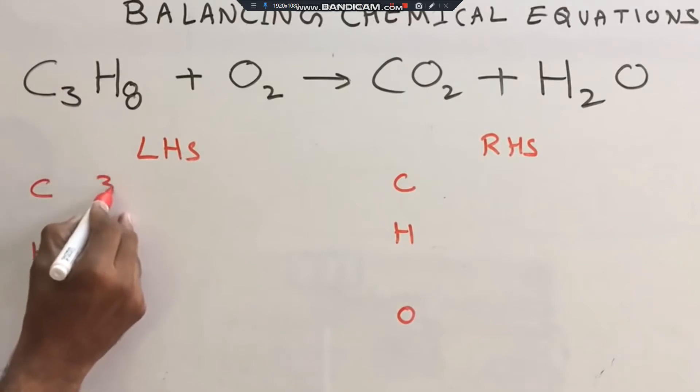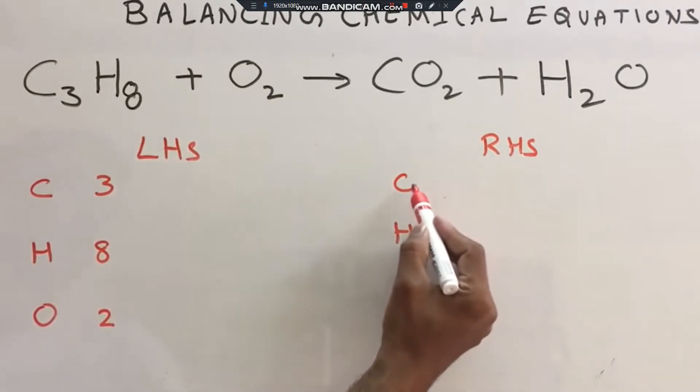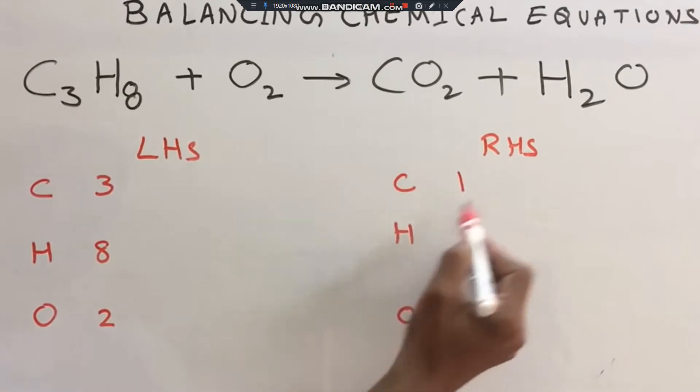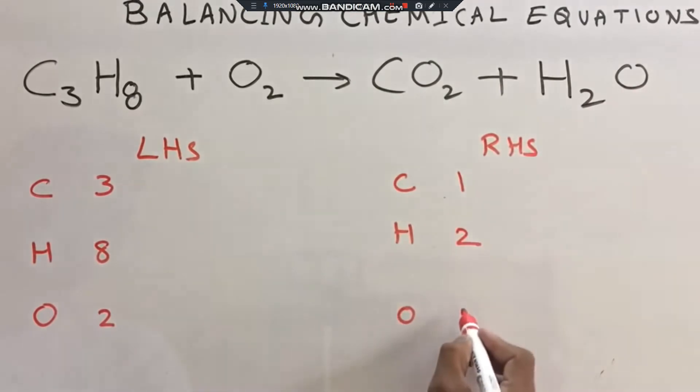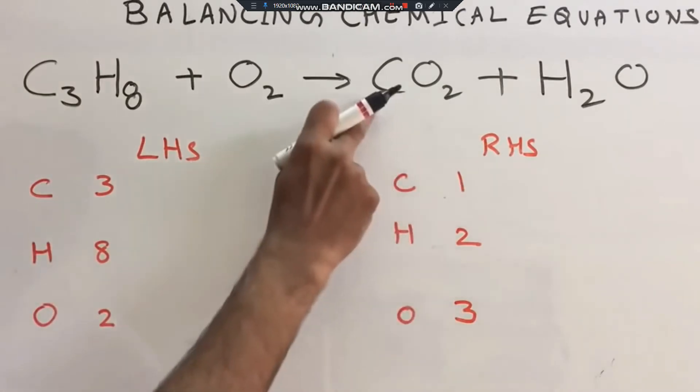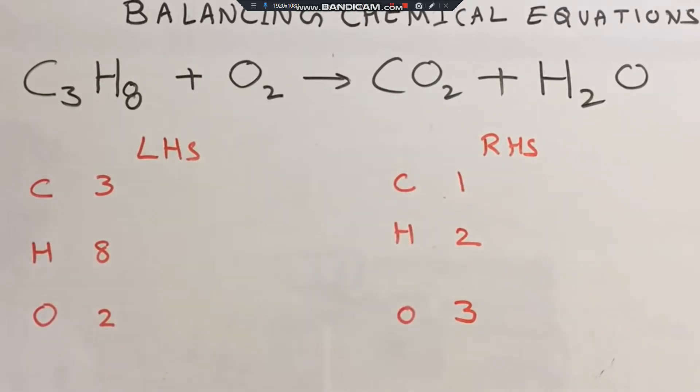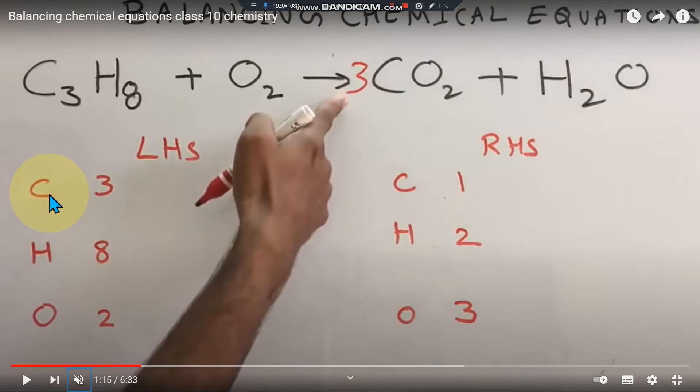So carbon on the left hand side, hydrogen, and oxygen - we need to check the products. Carbon, hydrogen, and oxygen on the right side. We need to balance oxygen, and these are non-metals, not metals. So we start with carbon. Carbon - how many carbons? On the left we have carbon, and on the right we need the same amount.